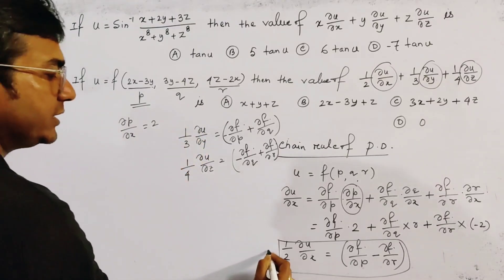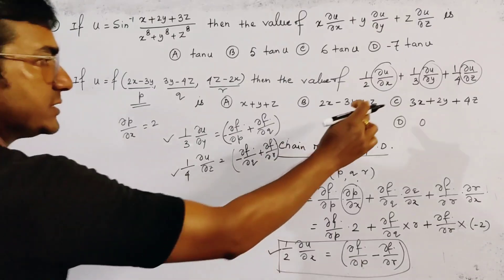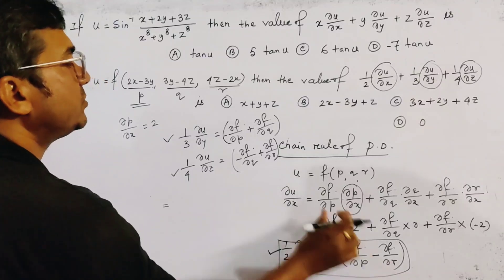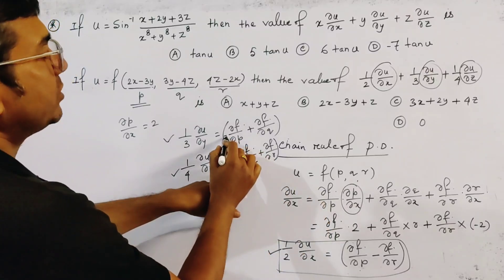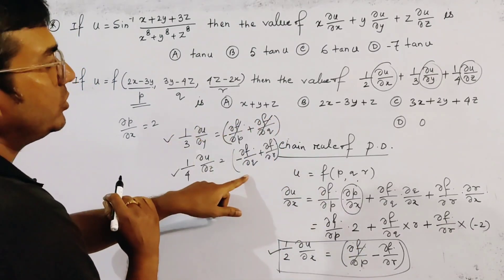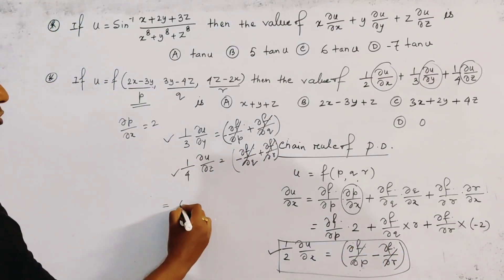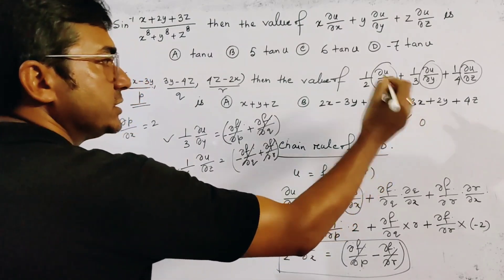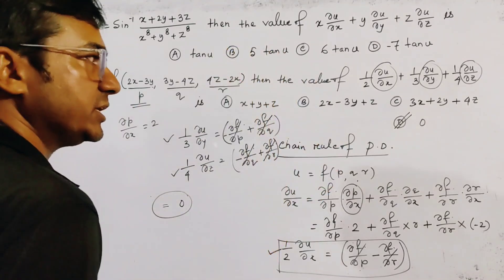Now adding all three expressions, the right-hand side is the sum of all three. We get ∂f/∂p and minus ∂f/∂p cancel out; ∂f/∂q and ∂f/∂q cancel out; ∂f/∂r and ∂f/∂r cancel out. So our required result is 0, and option number 4 is correct. Very simple, but using the chain rule of partial derivative.